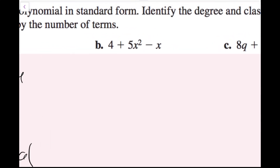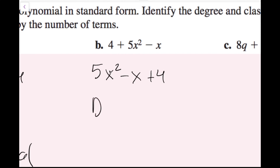For part b, writing in standard form: there's an x squared term, then an x term, then a constant. So it becomes 5x squared minus x plus 4 — bring the sign along with each term. The degree is 2, the largest degree of any term, and since there are three terms, this is a trinomial.